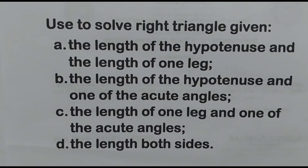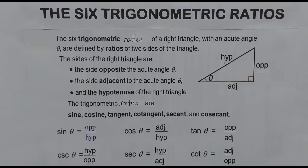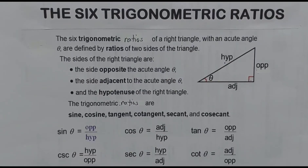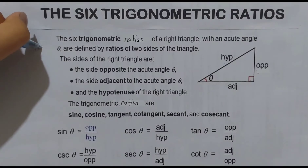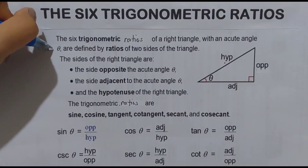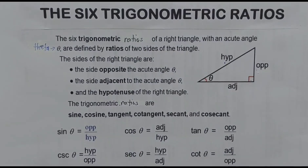Before we go to an example, let us identify first what the 6 trigonometric ratios are. Let us understand more about them. In the given right triangle, we have an acute angle denoted by theta — T-H-E-T-A — which is used to denote the unknown measure of an angle. It is defined by ratios of two sides of the triangle.